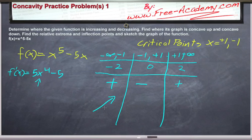We're increasing from negative infinity to negative 1. We're decreasing from negative 1 to positive 1. And we're increasing from positive 1 to infinity. And where you go from increasing to decreasing, that means you must have a maximum. And where you go from decreasing to increasing, you have a minimum. So we have a min at positive 1 and we have a max at negative 1.